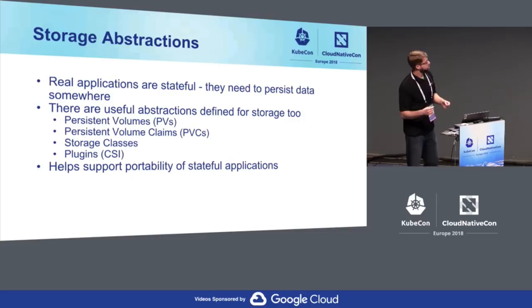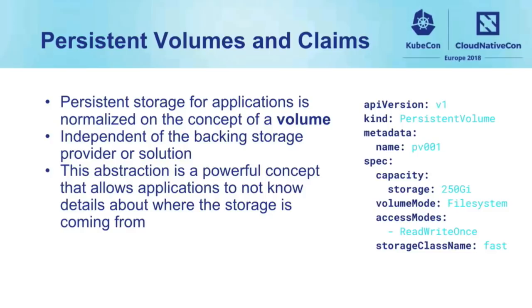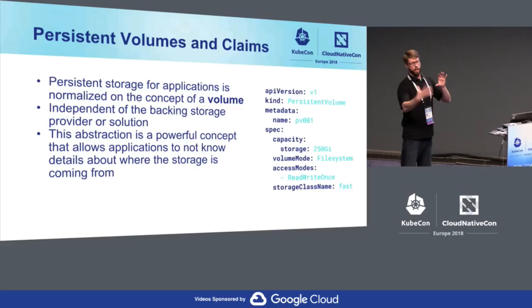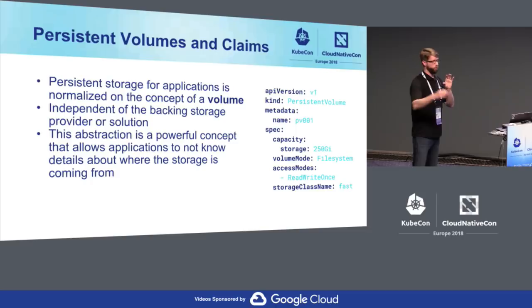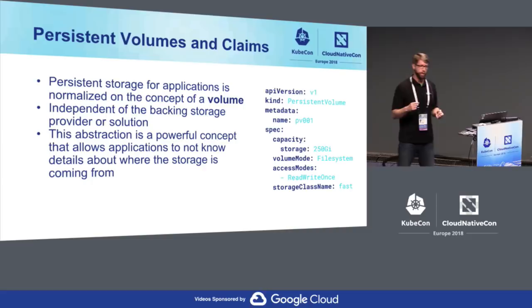A persistent volume — PV and PVCs — storage for applications is normalized on the concept of a volume. If a pod has a storage requirement, it's done in an abstract way through a volume. That volume is independent of the backing storage provider — where the storage is actually coming from. A pod could have a volume backed by a Google Persistent Disk or by a Ceph block device. The volume is the abstract concept, and that's very powerful because it enables the application to not have to worry about where the storage is coming from.